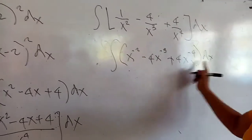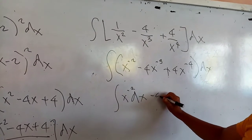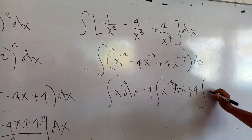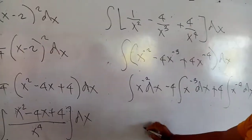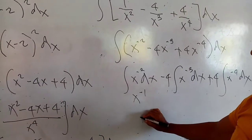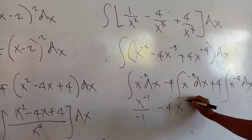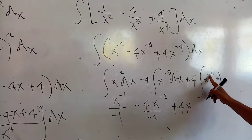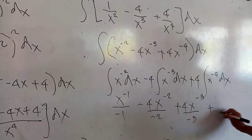To do step by step, I multiply term by term: that would be the integral of x to the negative 2 times dx, minus 4 times the integral of x to the negative 3 times dx, plus 4 times the integral of x to the negative 4 times dx. By the power formula: x to the negative 2 plus 1 equals negative 1, all over negative 1; minus 4 times x to the negative 3 plus 1 equals negative 2, divided by negative 2; plus 4 times x to the negative 4 plus 1 equals negative 3, all over negative 3; plus the constant of integration c.